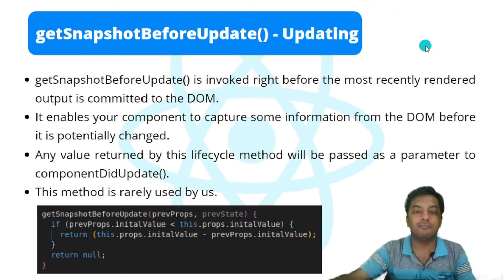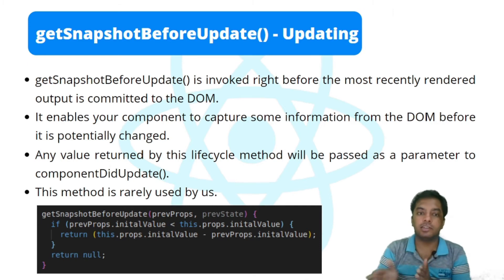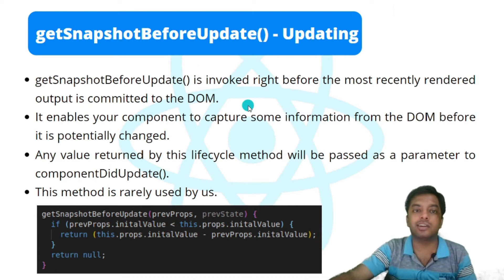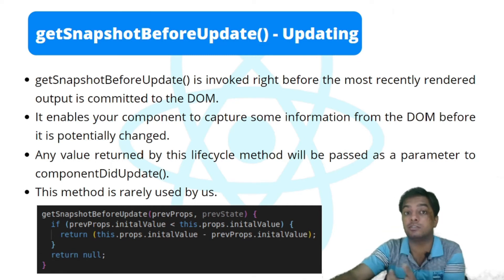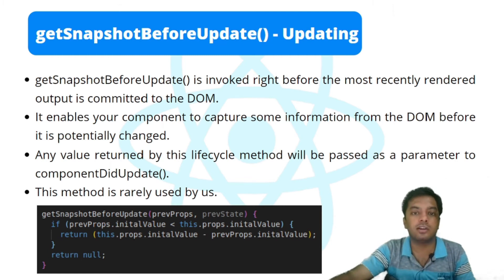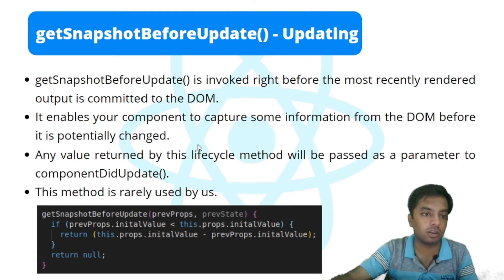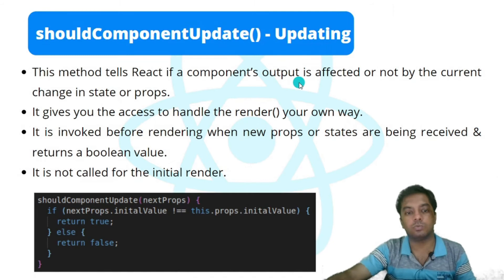Next comes getSnapshotBeforeUpdate in the updating phase. React maintains two virtual DOMs while updating — one before the update and one after. This method takes a snapshot of the virtual DOM before the update and stores it. It is invoked right before the most recently rendered output is committed to the DOM. Any value returned by this lifecycle method is passed as a parameter to componentDidUpdate. This method is rarely used by developers manually, though React uses it internally.